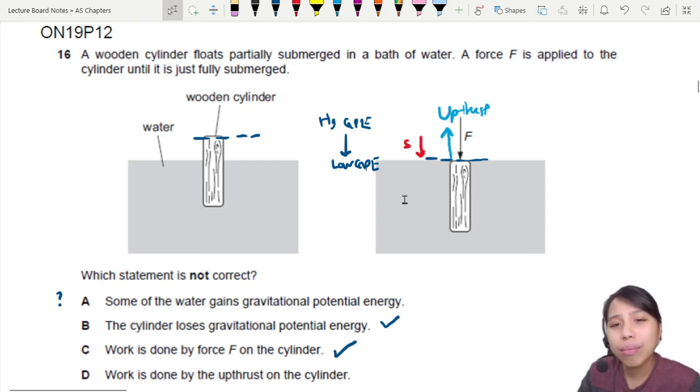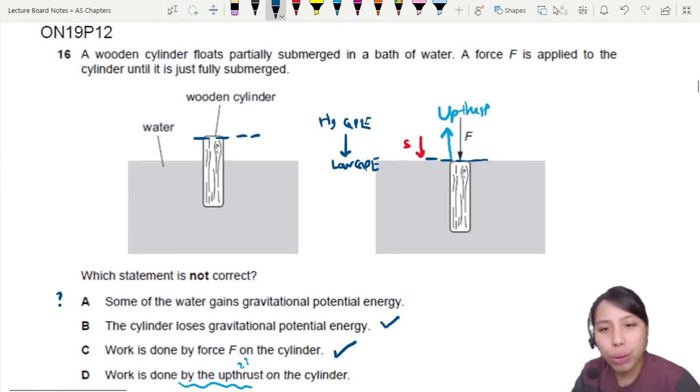So upthrust didn't really do work. It's negative work. We don't usually say work done by upthrust. If the force is upward while displacement is downward, you don't do positive work. This statement is not correct. So now it's between A and D. Let's check A again.